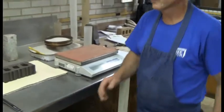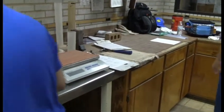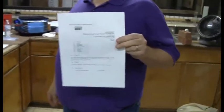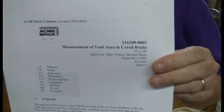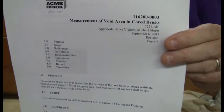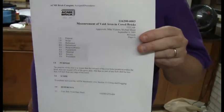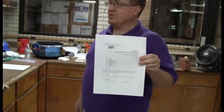Go ahead, Tim. The procedure for this is out on the ACME brick intranet. It's under Engineering and Production Services. You just go down there, select that, and follow the steps until you get to test procedures, and it'll have this procedure in there.